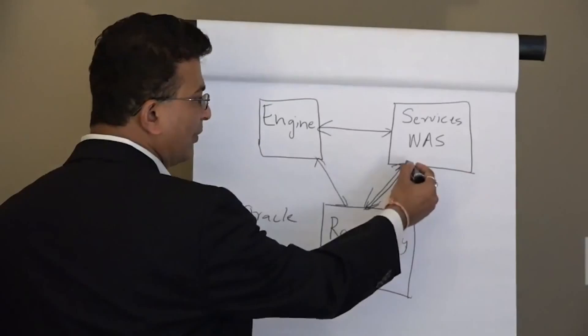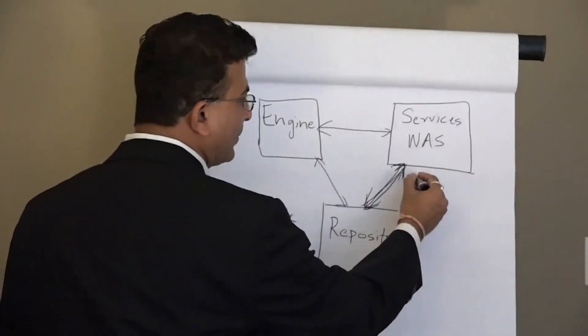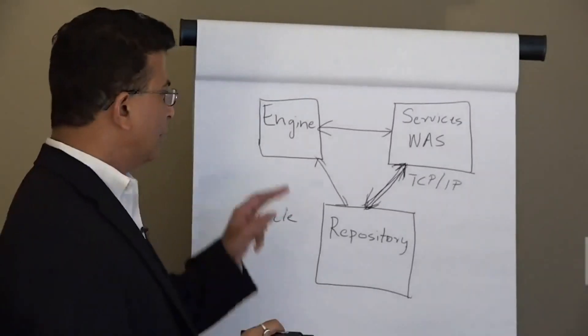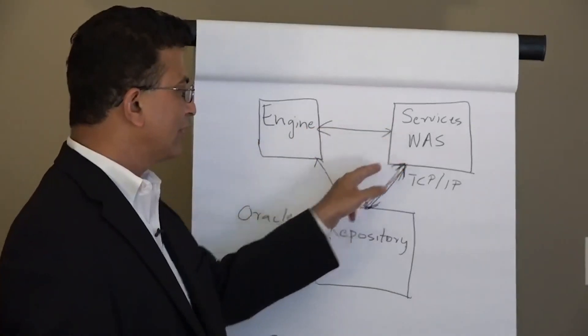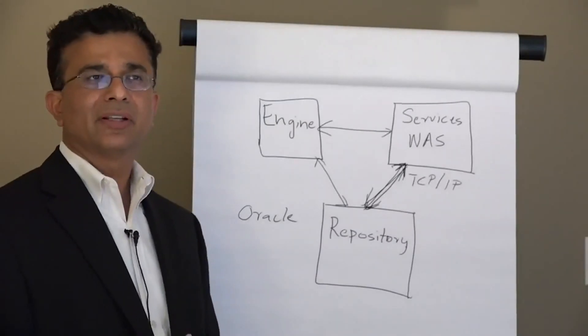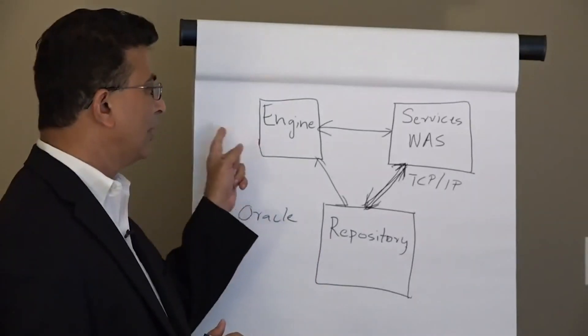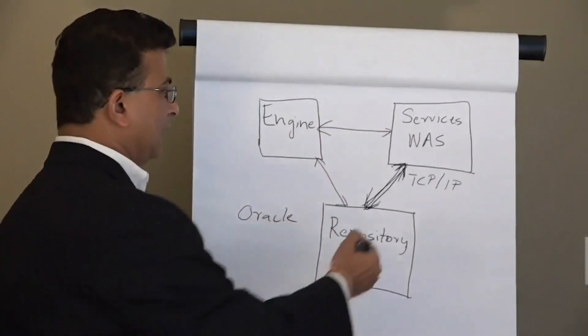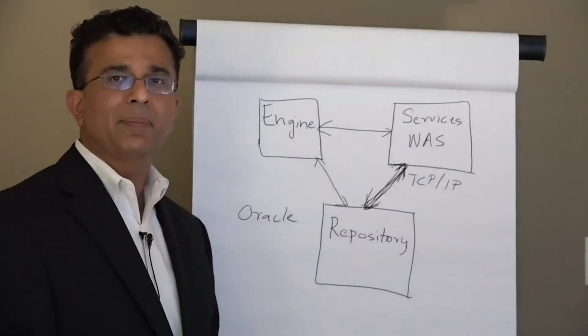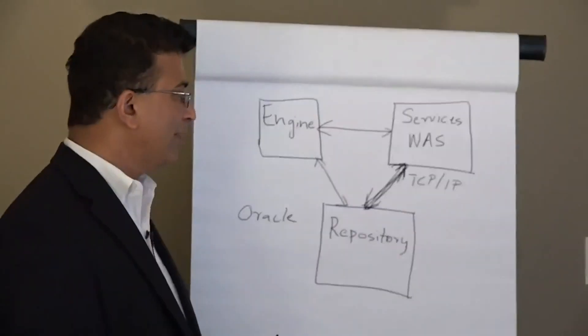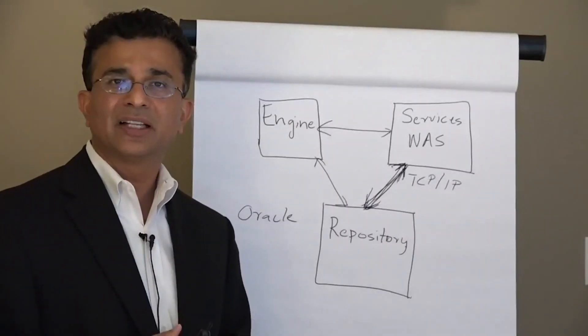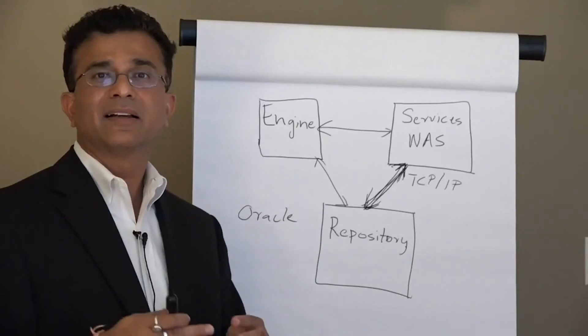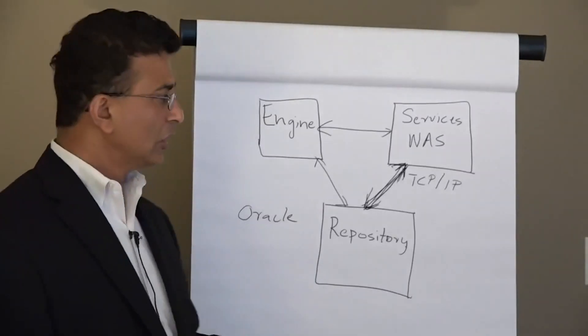The problem is that this communication when these are on two separate machines is through TCP/IP. Now, every time a developer logs on or just opens any job, you have got a communication from the client to the engine and then engine to the services, and then it goes to the repository. Imagine that if you have got around 20 to 30 developers who are trying to connect to your DataStage engine through their clients, all of them are going to have connections and data flow with the repository. If it is TCP/IP and if you have got even a little bit of a bandwidth issue, this can be a huge problem because suddenly your speed that the developer sees is very slow. As a result, a great decision can result in a very bad result.